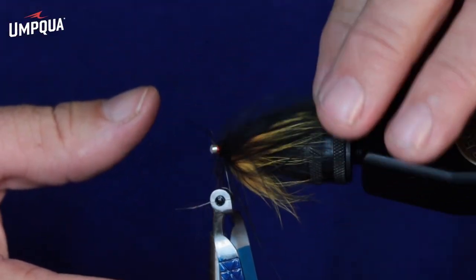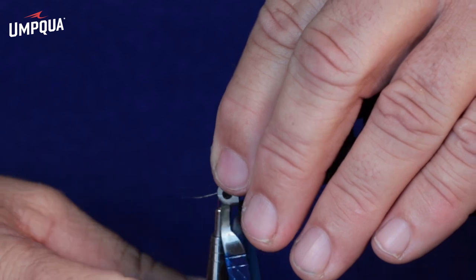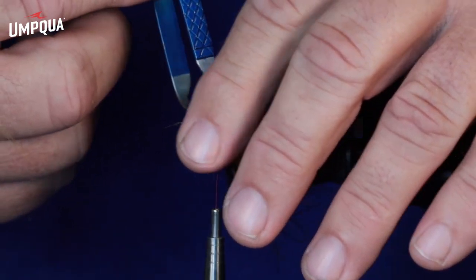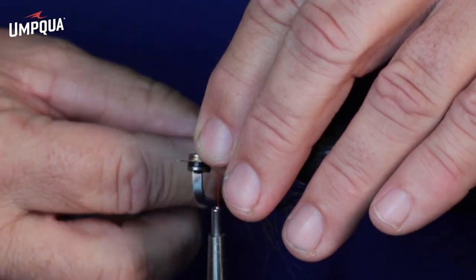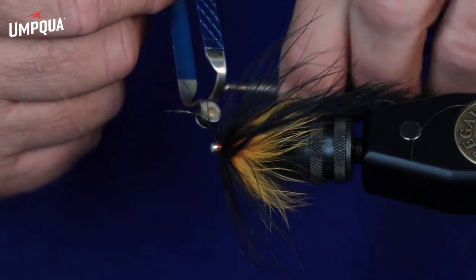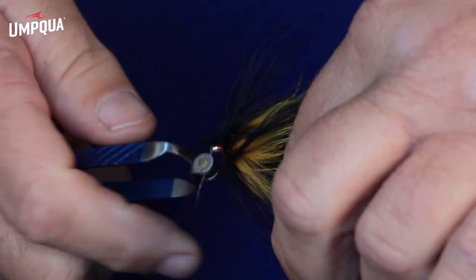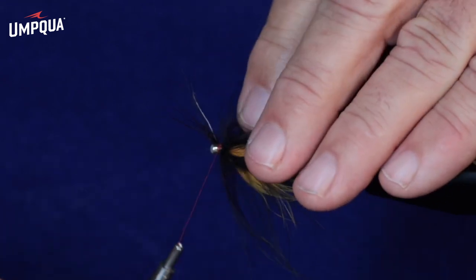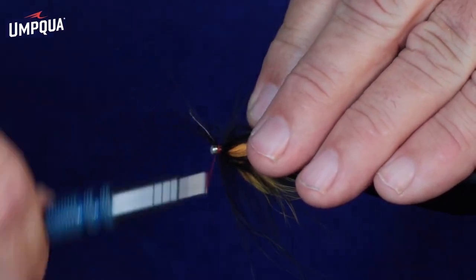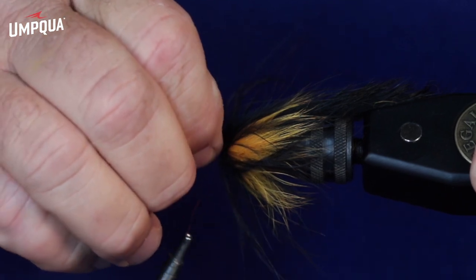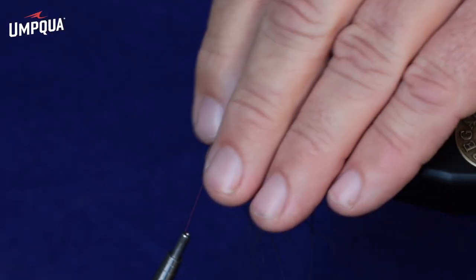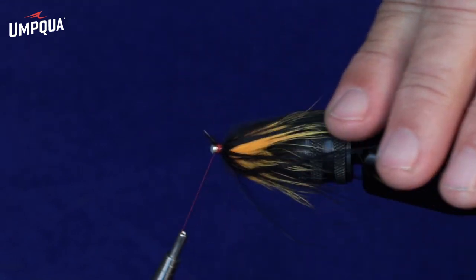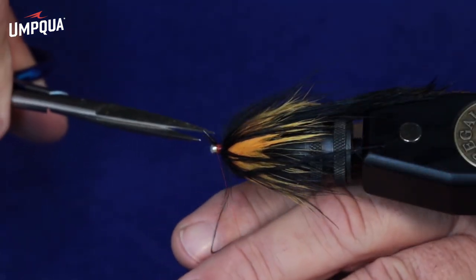So just keep on wrapping one turn in front of the last, and then as soon as you get to the point where there's no barbs left on the stem, you can go ahead and catch that stem, and lock it into place, and give it a little tug, make sure it's in there, work everything backwards, and then tidy up your head.